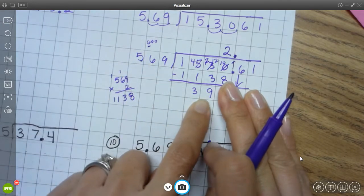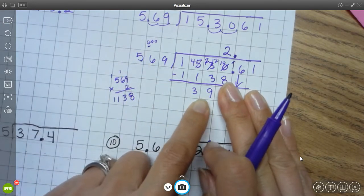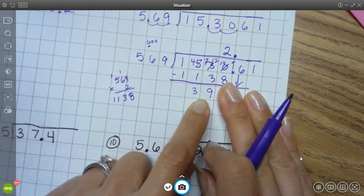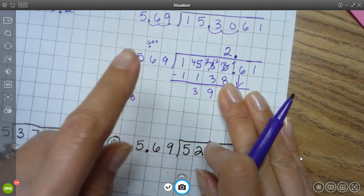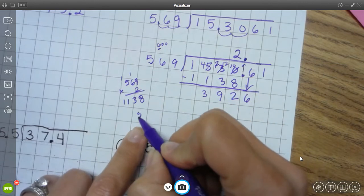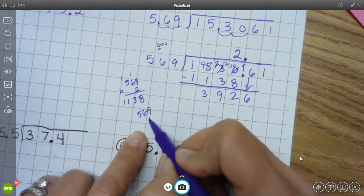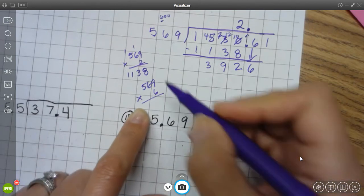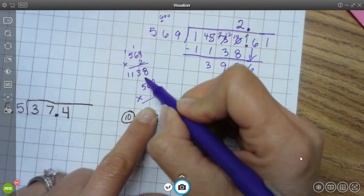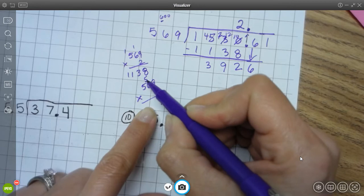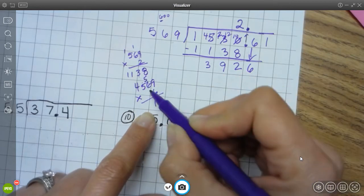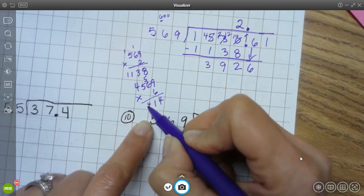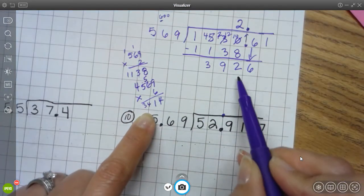6 goes into 39 how many times without going over? 6 times 5 is 30. 6 times 6 is 36. 6 times 7, or sorry, yeah, 6 times 7 is 42. So, 7 is too big. So, let's try 6. So, I'm going to go back to the original number, 569, and I'm going to try times 6, and I'm going to see what happens. 9 times 6 is 54. 6 times 6 is 36, plus 5 more. So, 36, or 7, 3, 8, 9, 40, 41. 5 times 6 is 30, plus 4 is 34. 3, 4, 1, 4. Yep, that's it.